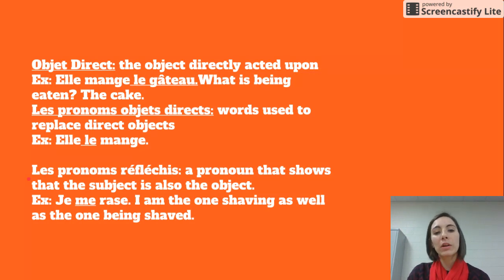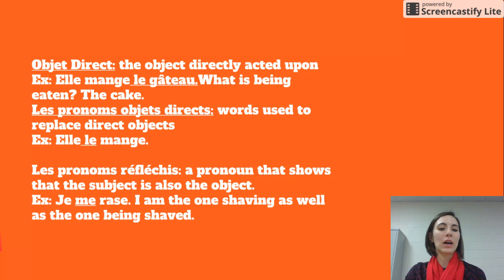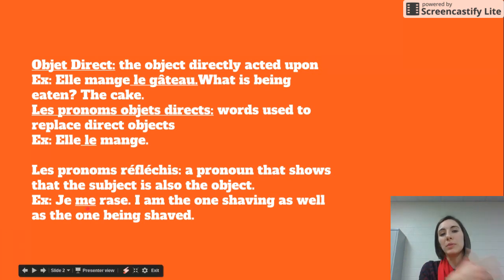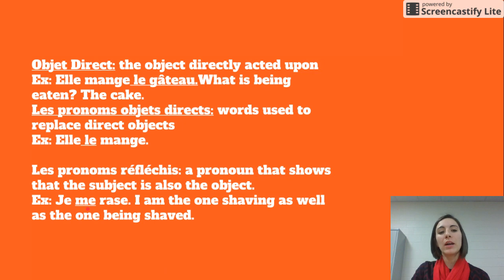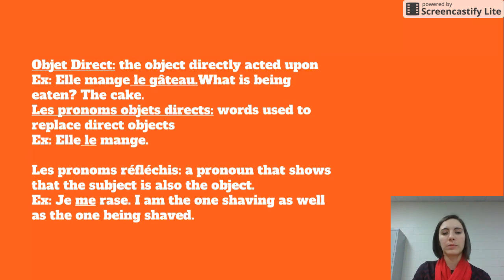Then we have our pronom réfléchi, which is a pronoun that shows that the subject is also the object of the verb. For example, je me rase — I am the one shaving as well as the one being shaved, because I'm shaving myself. Our pronom réfléchi can only be people, because people are the ones doing actions to themselves.